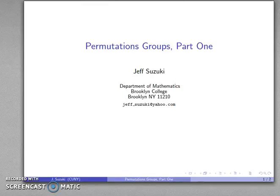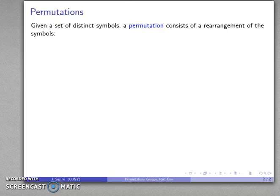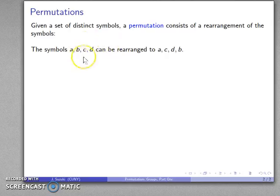Let's study a group that is somewhat more concrete — the permutation group. Given some set of distinct symbols, a permutation consists of some rearrangement of those symbols. For example, if I take the symbols A, B, C, and D, I can rearrange these symbols as A, C, D, and B.